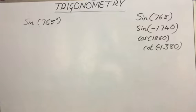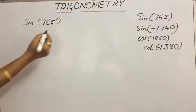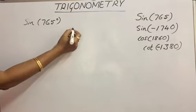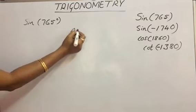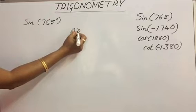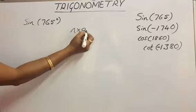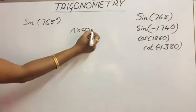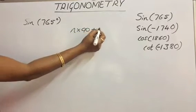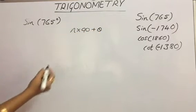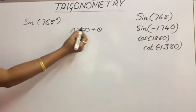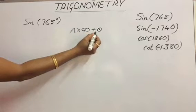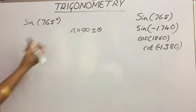To represent every trigonometric angle, there are two types of representation. One is n×90 + θ or n×90 − θ.